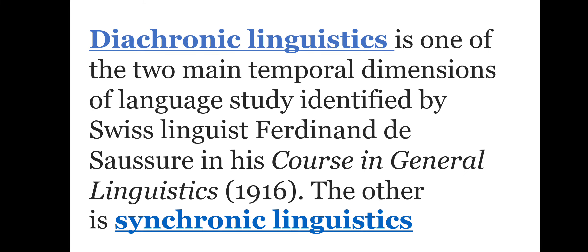In this video, we are going to discuss what diachronic is and what synchronic is. Synchrony and diachrony are another primary pair introduced by Ferdinand de Saussure. He introduced these binary pairs — synchronic linguistics and diachronic linguistics. Diachronic linguistics is one of the two main temporal dimensions of language study, identified by Swiss linguist Ferdinand de Saussure in his Course in General Linguistics, 1916. The other is synchronic linguistics.